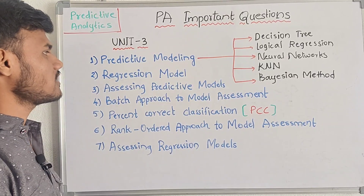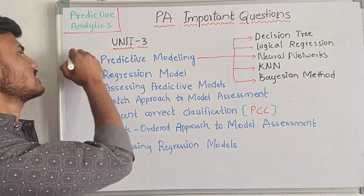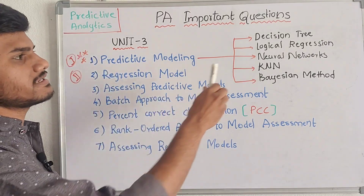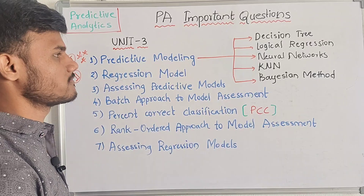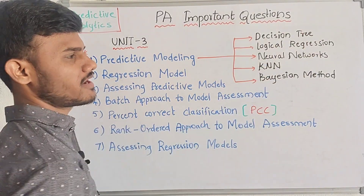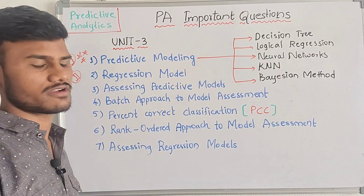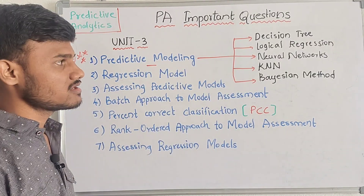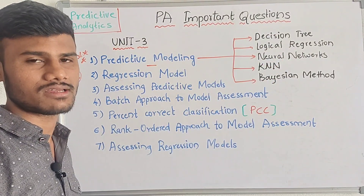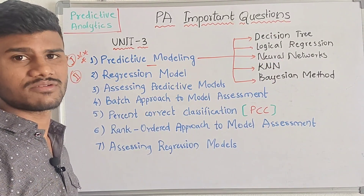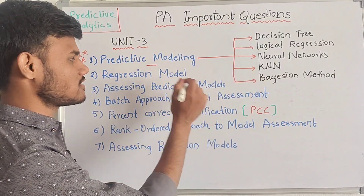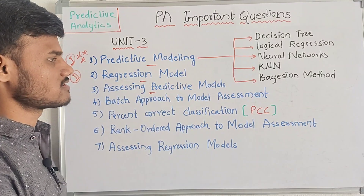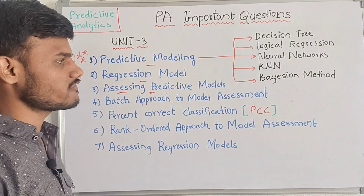We have two parts. Ninety percent, 10 marks are easier to score. We have these five topics perfected. Predictive Modeling and Regression Modeling, and Assigning Predictive Models — these are the sections.